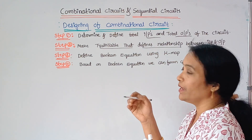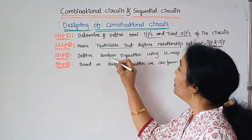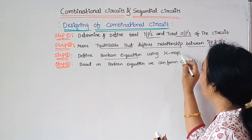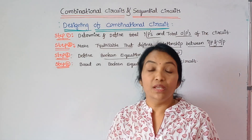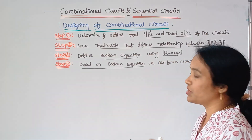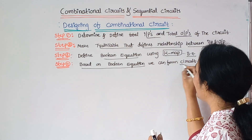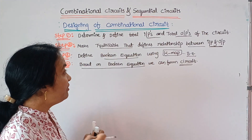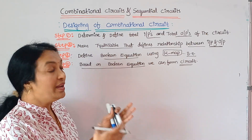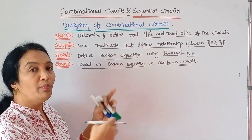The next step: after writing the truth table, we design the K-map — a sum K-map and a carry K-map. Then, based on the K-map, we get a Boolean equation. From that Boolean equation, we can form the circuit diagram. If there is a direct truth table, the K-map gives a direct circuit diagram; otherwise, we use the Boolean equation.